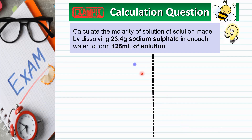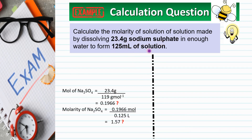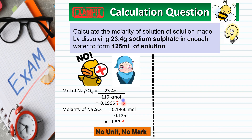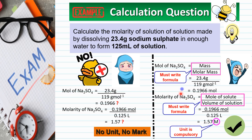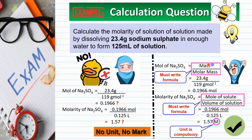This is an example of a calculation question. The first sample answer is wrong because the calculations do not include the formula and the final unit. Please remember to always write the formula completely and include the correct final unit.